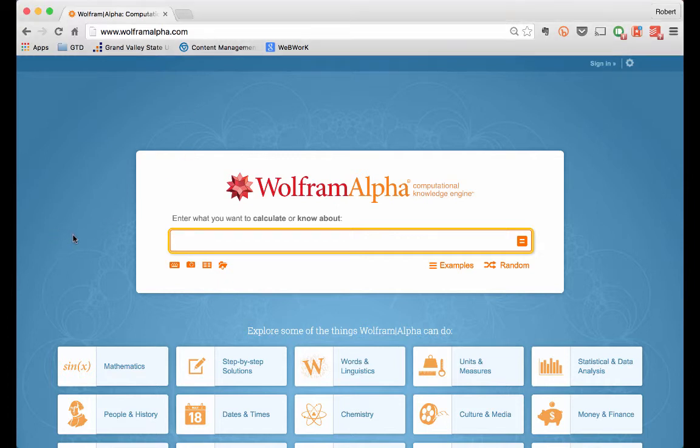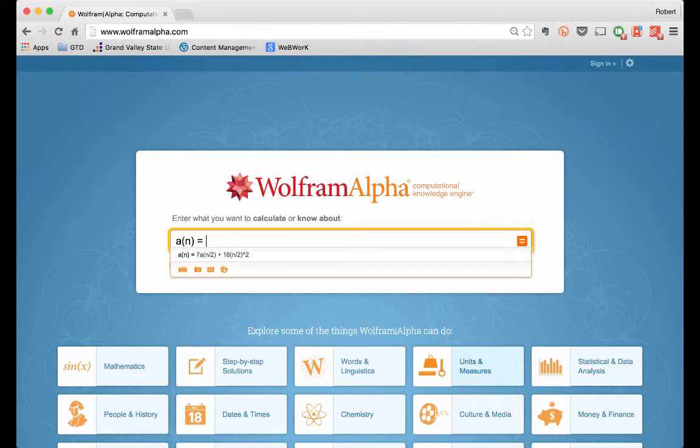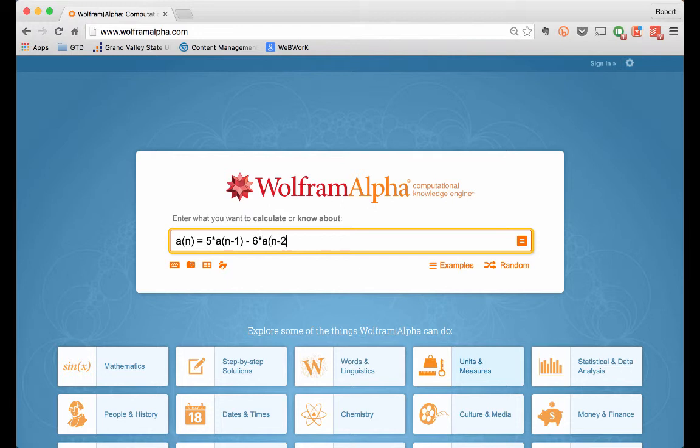Finally, a tip for using technology. On Wolfram Alpha, you can enter in recurrence relations just like you would on paper, except you should use function notation and specify the initial conditions. For example, here is the recurrence relation with initial conditions that we saw on the last slide. When you enter this in and hit enter, Wolfram Alpha will solve the recurrence relation for you.